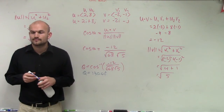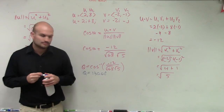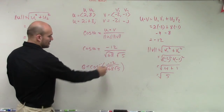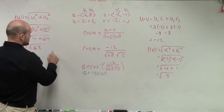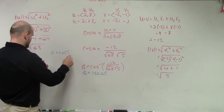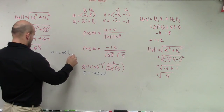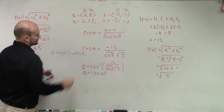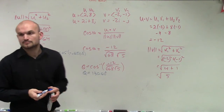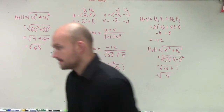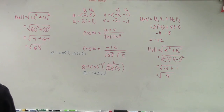So theta equals the inverse cosine of negative 0.6508, and then you take the inverse cosine of that to get the final angle. Any questions?